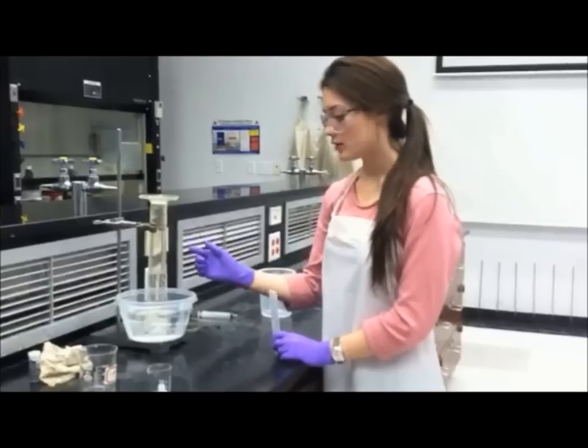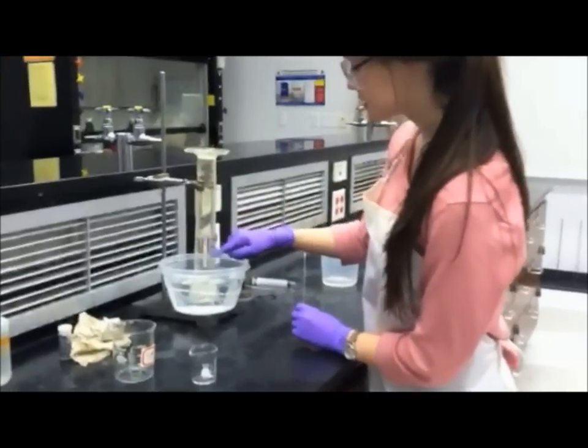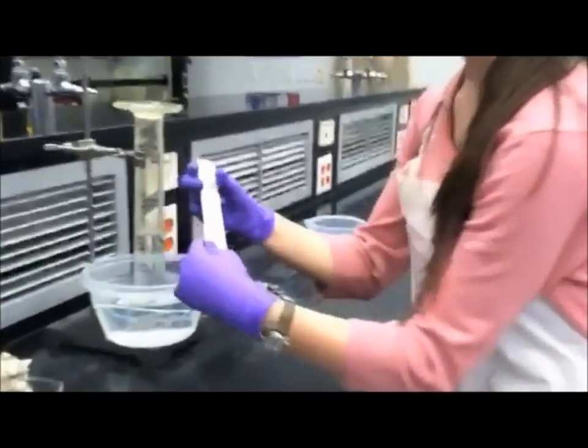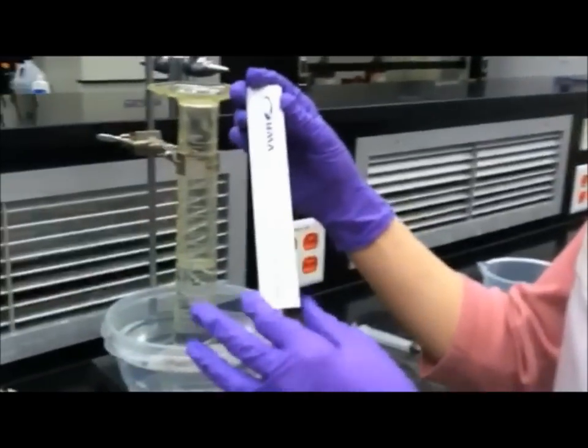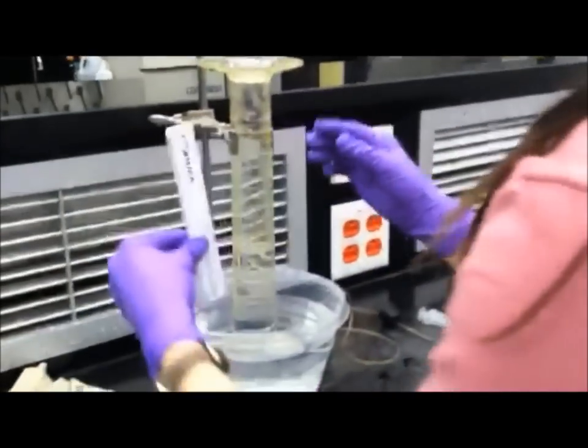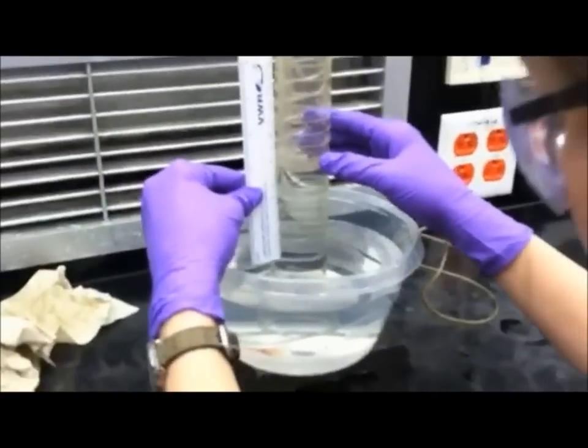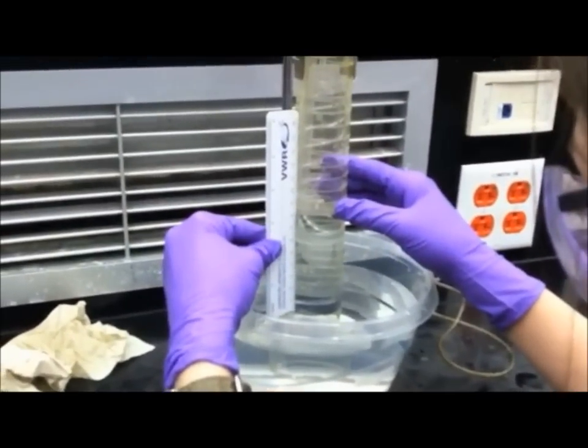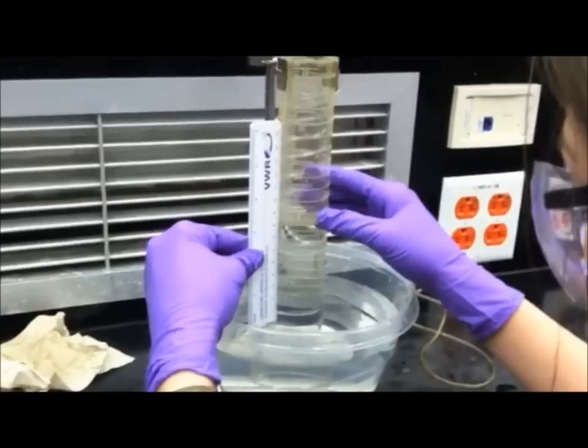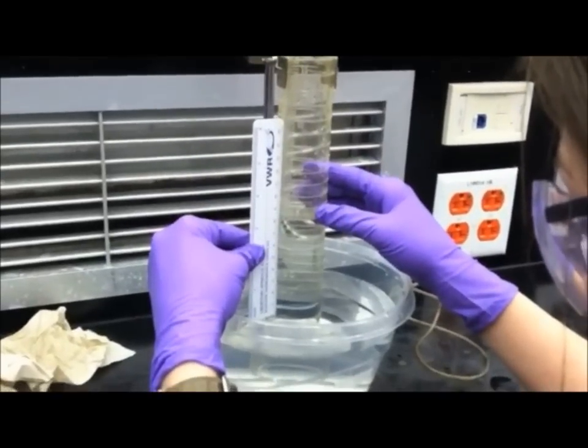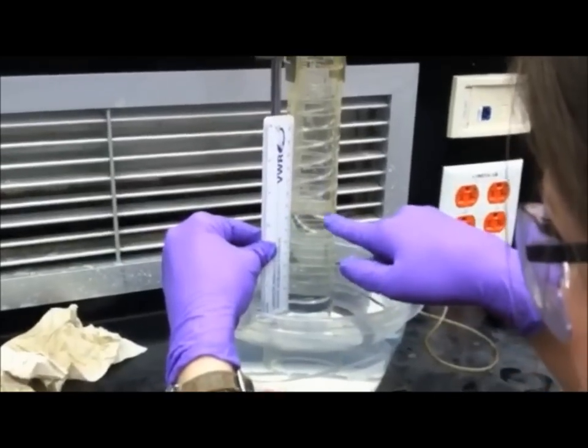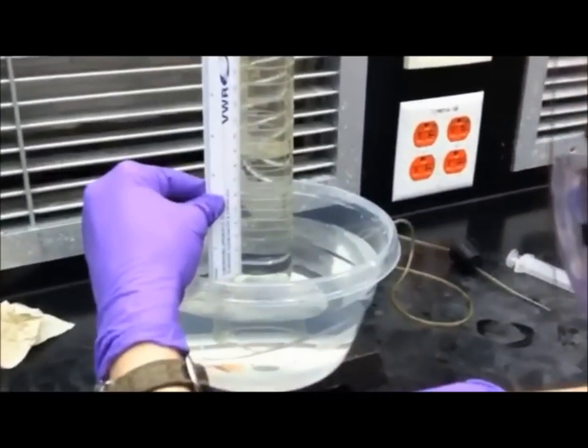So now to measure the height difference between the water bath and the graduated cylinder. The easiest way to do this is by taking a centimeter ruler and measuring very closely the difference in the two water levels by lining up the end of the ruler at the surface of the water. And then, as you can see, for ours, it is about 8.43.